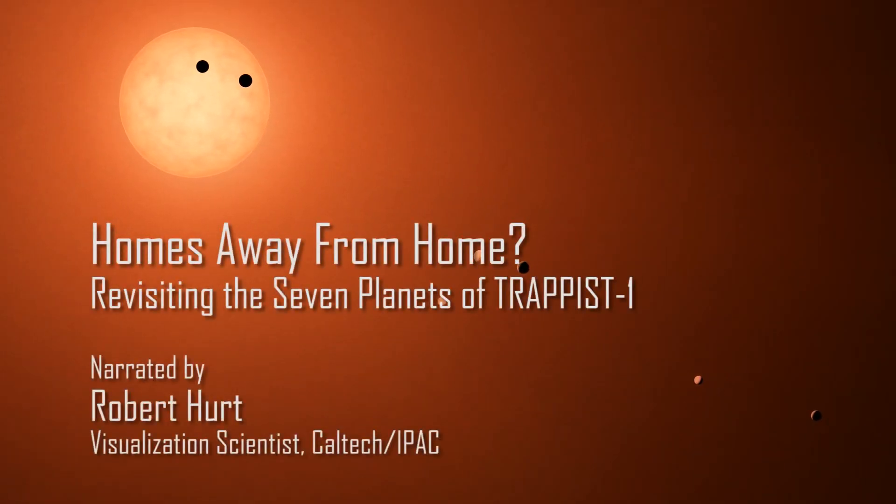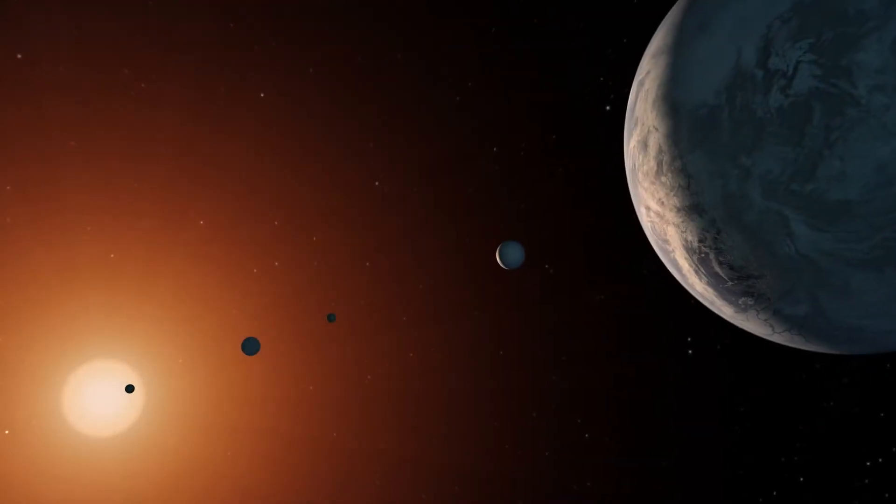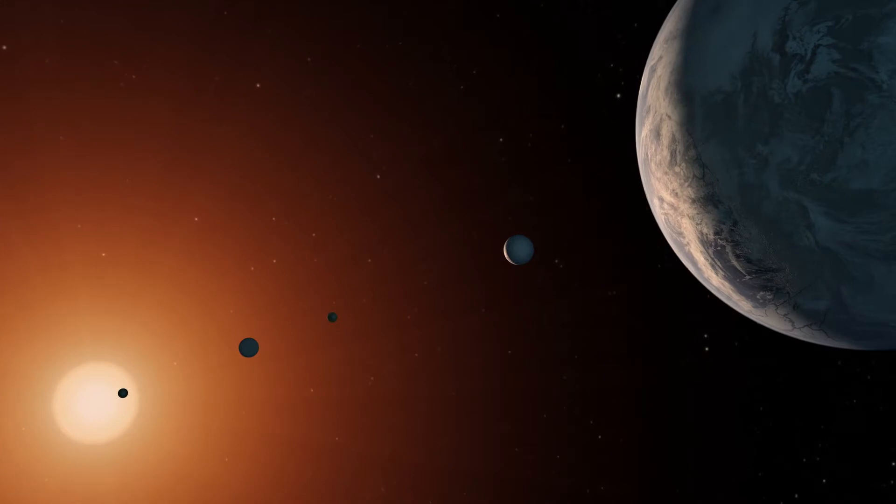In February of 2017, astronomers wowed the world with a discovery that a total of seven Earth-sized worlds orbited the faint star known as TRAPPIST-1.